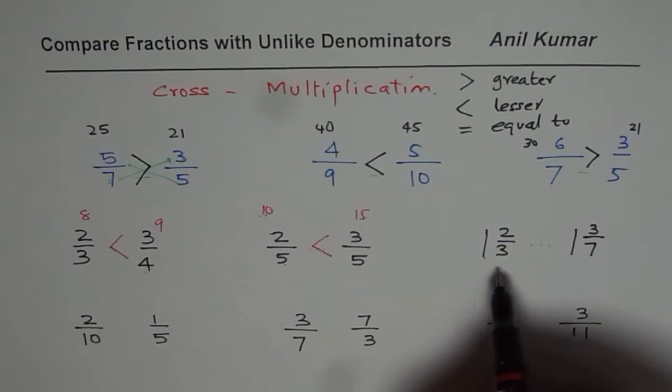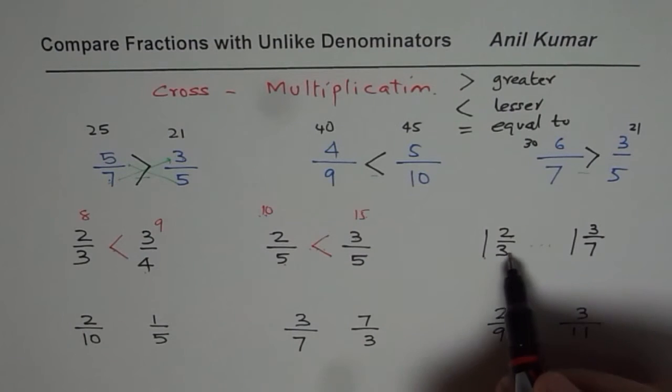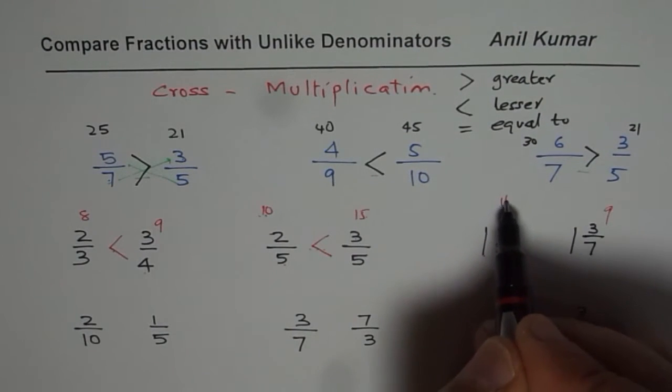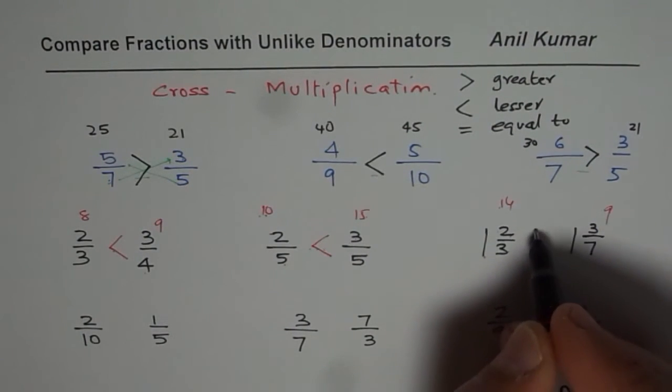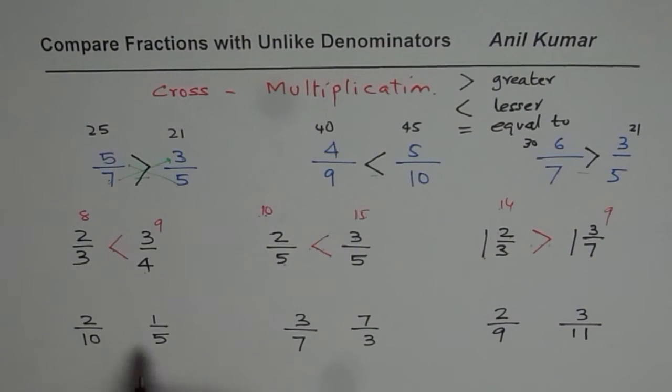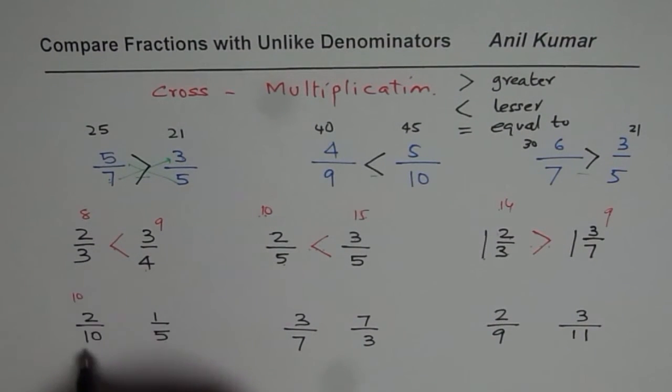1 and 1 are same. Let us compare the fractions. 3 times 3 is 9, 7 times 2 is 14, 14 is greater than 9, so I should get here. 5 times 2 is 10, 10 times 1 is 10, both are equal, so equal to comes in this place.